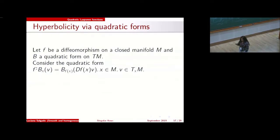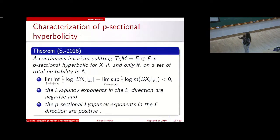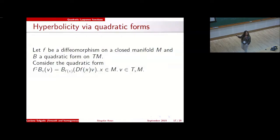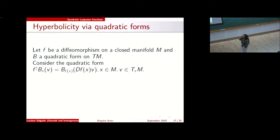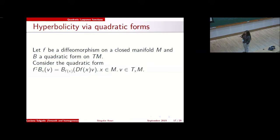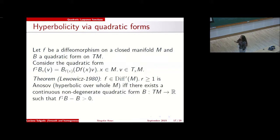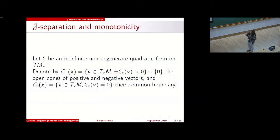I want to talk about hyperbolicity via Lyapunov functions — this is the main point. The gap condition was proved using this theory. The inspiration is the well-known result that for a diffeomorphism with quadratic form B, where the push-forward of B by F is defined, Anosov proved that F is hyperbolic on the whole manifold if and only if there exists a continuous non-degenerate quadratic form B such that this form is positive definite.